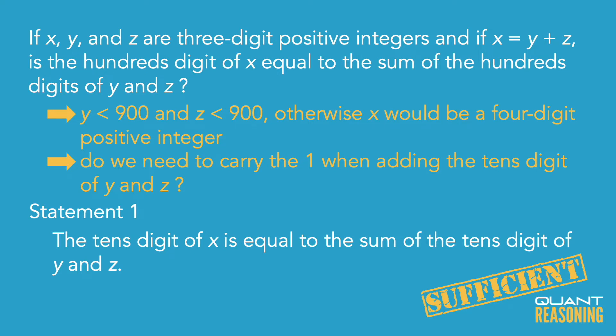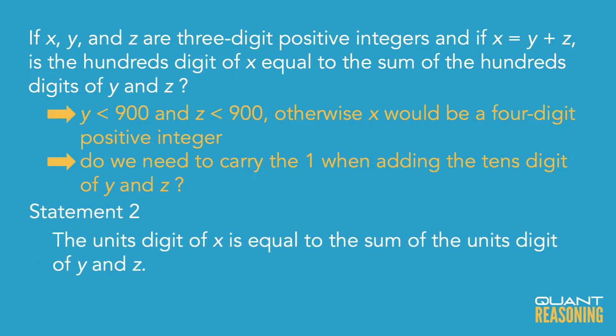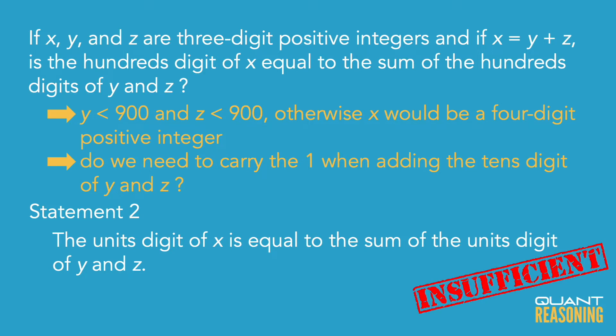If the tens digit of the sum is, in fact, the sum of the tens digits of Y and Z, then we're not carrying a one. So statement one is sufficient on its own. On the other hand, statement two is just talking about the units digits, so we can't make a proper inference about what happens when the tens digits are added. Statement two is not sufficient on its own, and the correct answer is A.